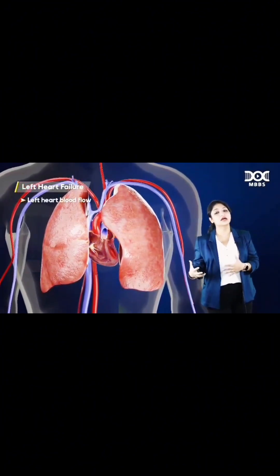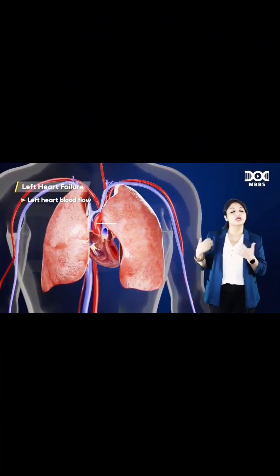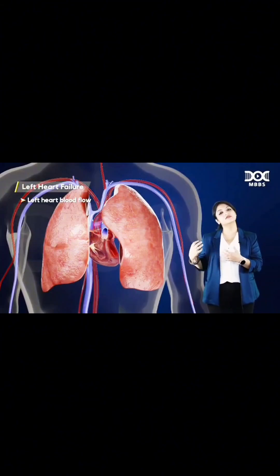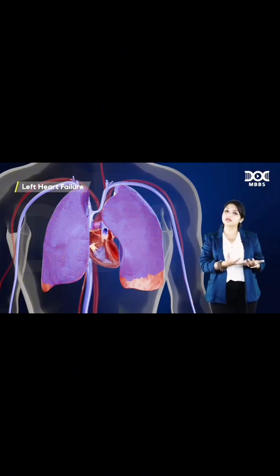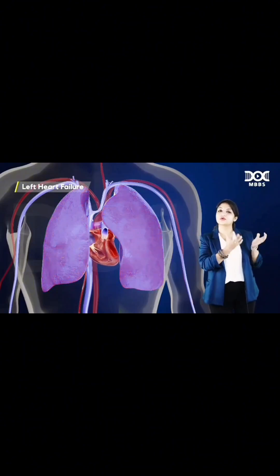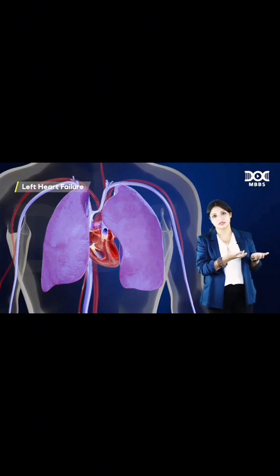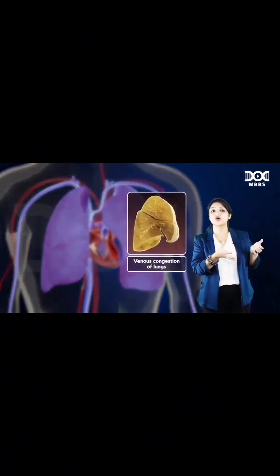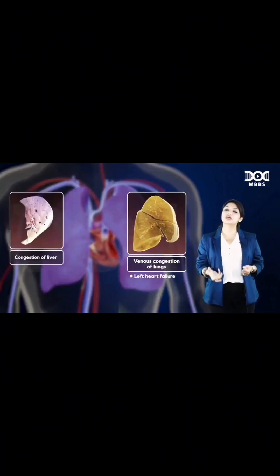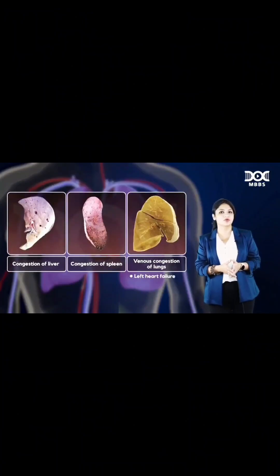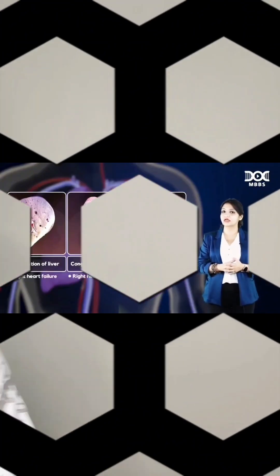Similarly, in left heart failure, the left heart has to pump blood to the whole body via the aorta. But if the left heart is failing and is not able to send blood to the aorta, the blood is going to go back to the lungs, causing congestion in the lungs. So venous congestion of the lungs usually occurs in left heart failure, whereas congestion of the liver and spleen occurs in right heart failure.